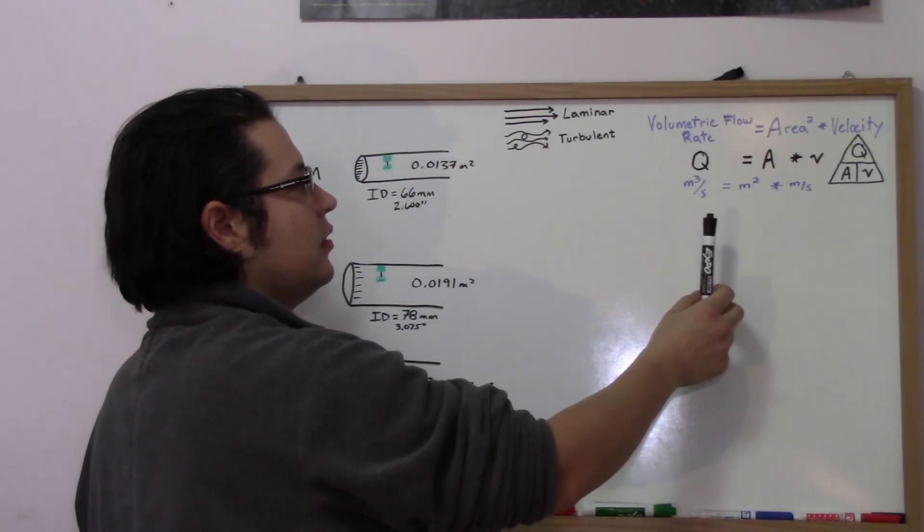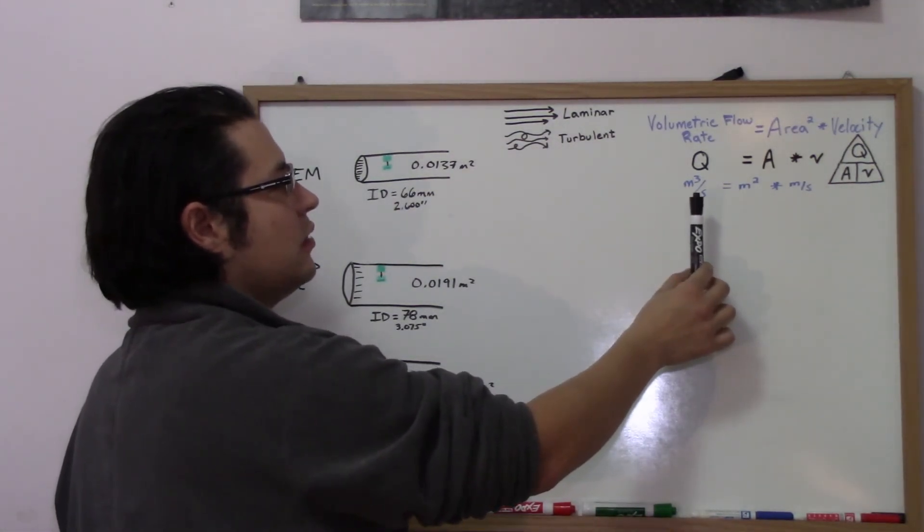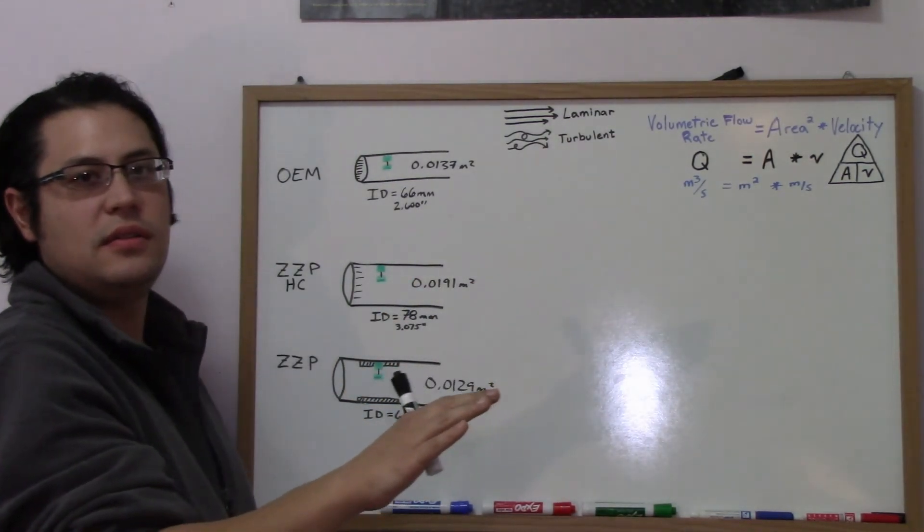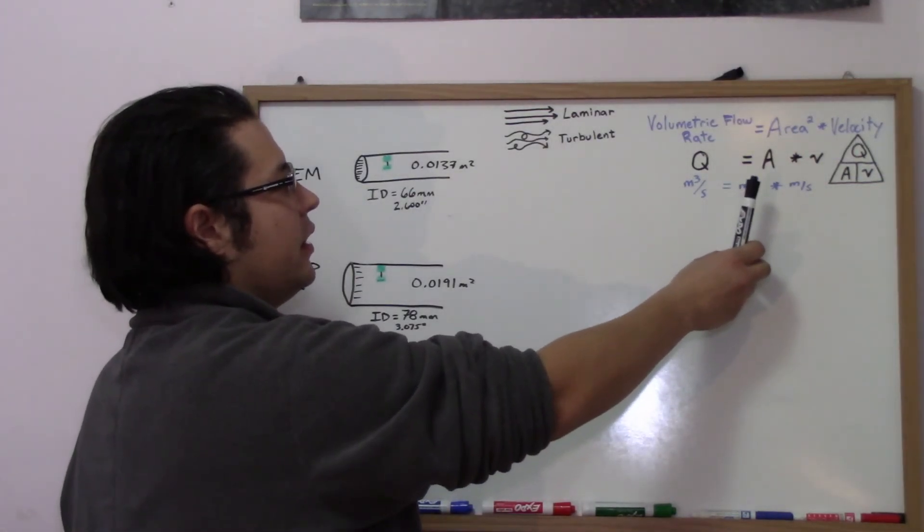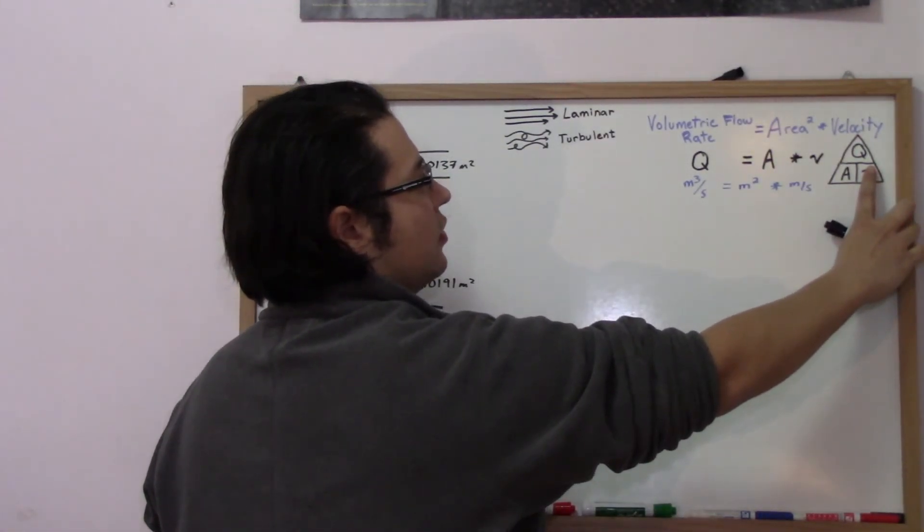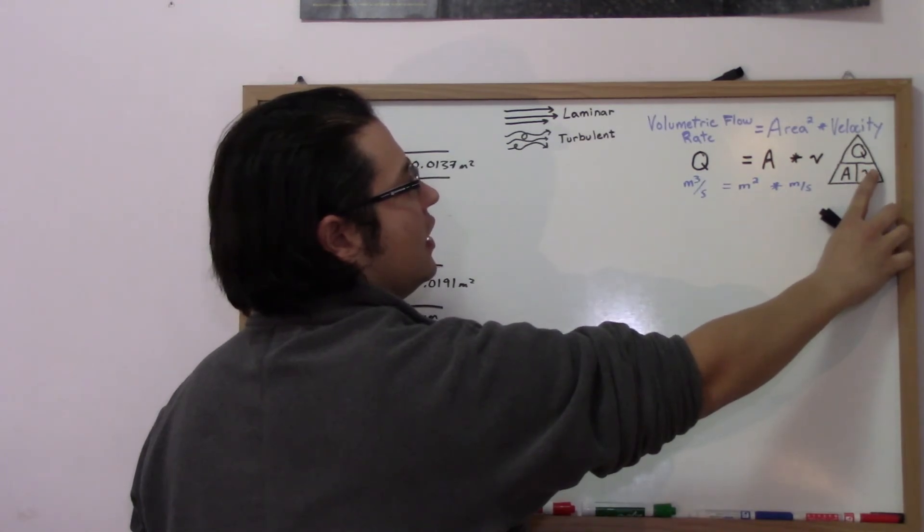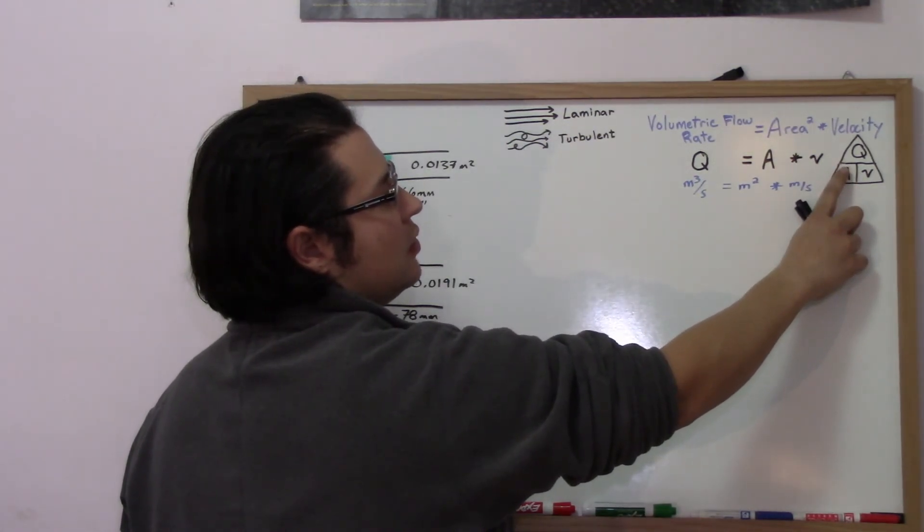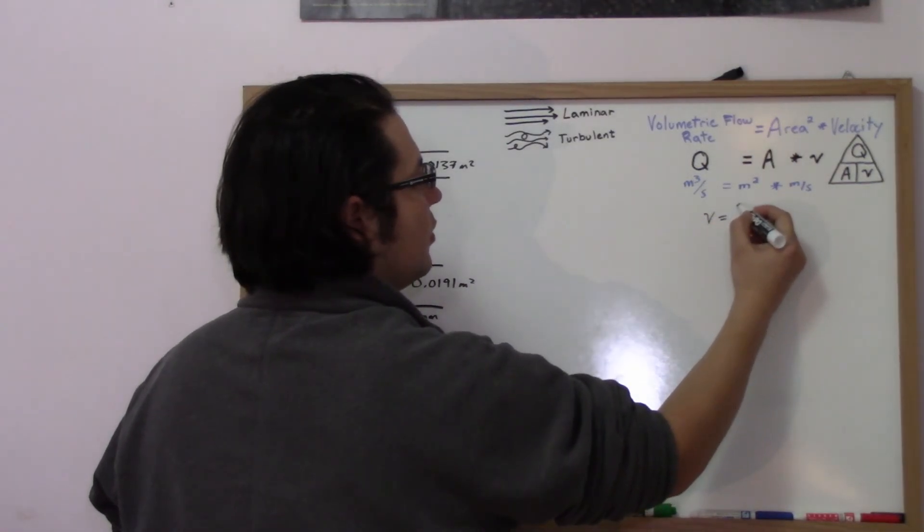We're going to use some science. Volumetric flow rate Q equals the area A times the velocity V. We're going to standardize the flow rate, so across these different configurations the engine is demanding the same exact amount of airflow. Our area is known, what we don't know is velocity. Little Ohm's law trick, you can draw that in a triangle pattern, so A times V is on the bottom. If you cover up velocity, it's Q over A.